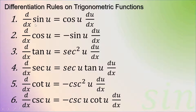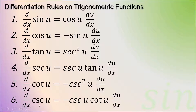If we are going to derive sine, that is equal to cosine u times du over dx. The derivative of cosine u with respect to x is equal to negative sine u times du over dx. The differential of tangent u with respect to x is equal to secant squared u times du over dx. The differential of secant u with respect to x is equal to secant u tangent u times du over dx. The differential of cotangent u with respect to x is negative cosecant squared u times du over dx. The differential of cosecant u with respect to x is equal to negative cosecant u cotangent u times du over dx.